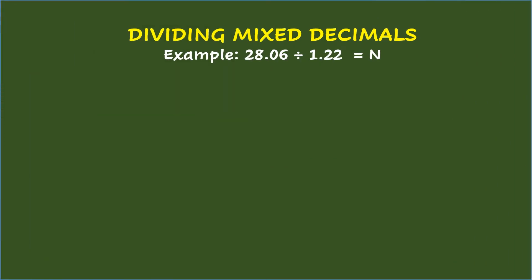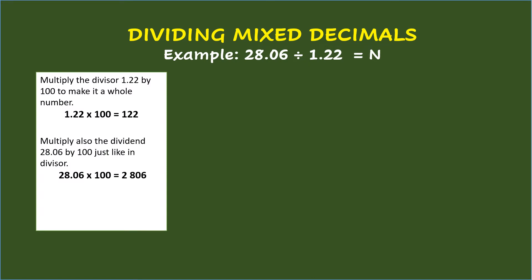Dividing mixed decimals. Example: 28.06 divided by 1.22 equals n. To get n, multiply the divisor 1.22 by 100 to make it a whole number. So, 1.22 times 100 equals 122. Then multiply also the dividend 28.06 by 100, just like with the divisor. So, 28.06 times 100 equals 2,806.